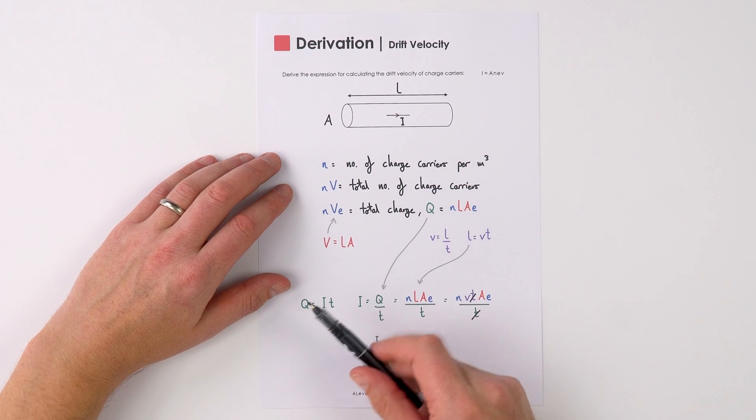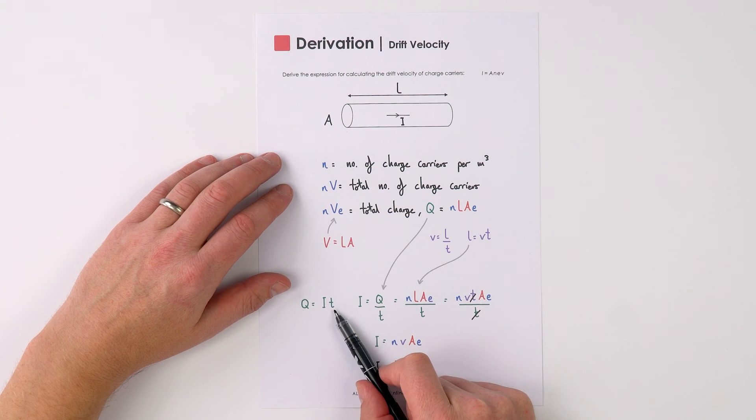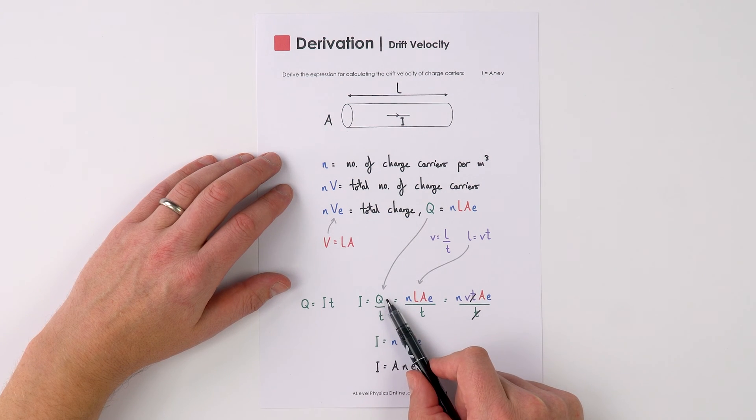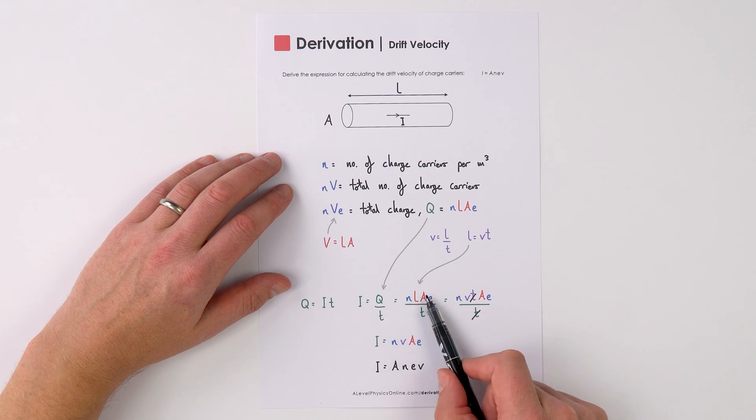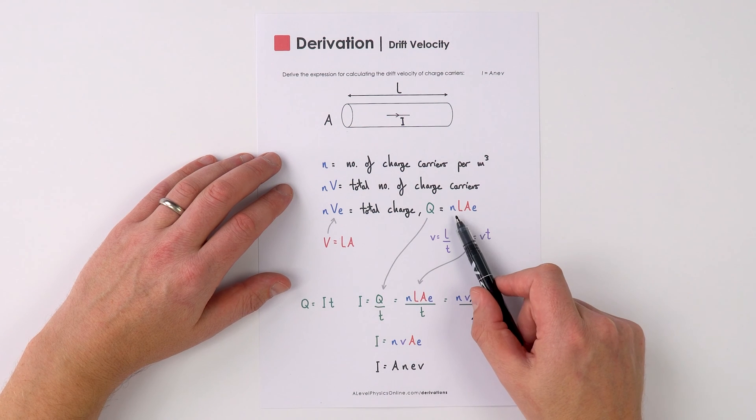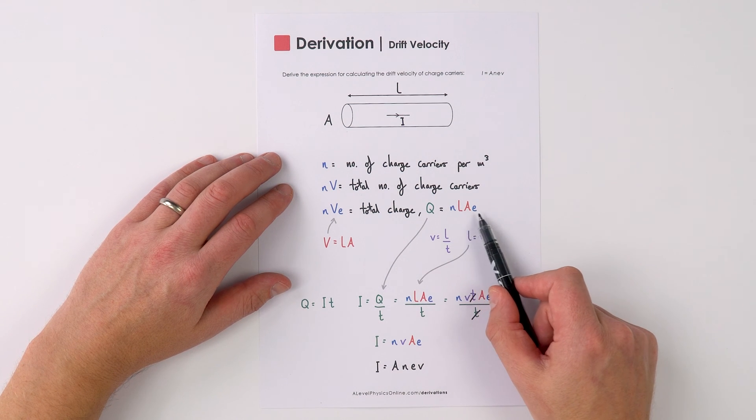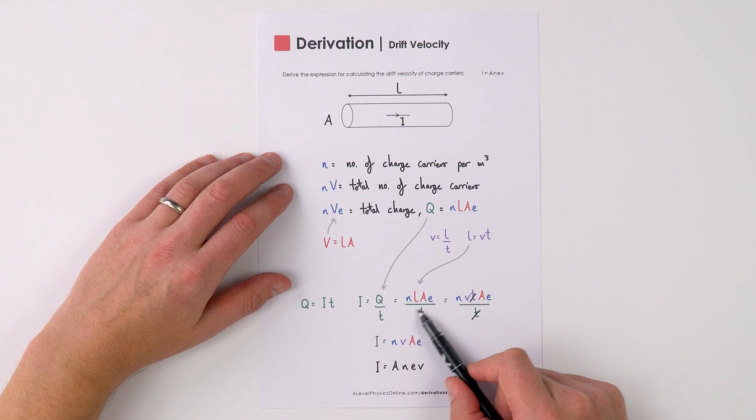We also know that charge is equal to current times time, or the current is equal to the charge transferred per unit time. That charge transferred is going to be equal to N L A E over a time of T.